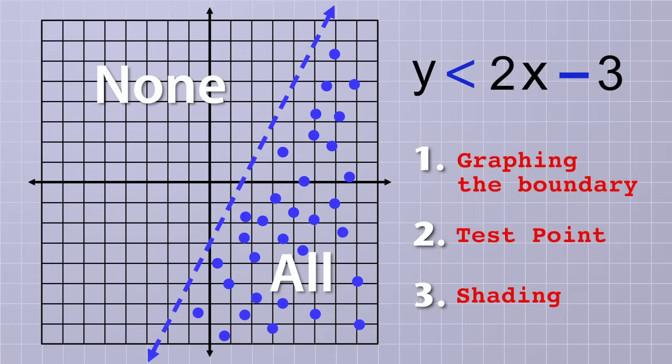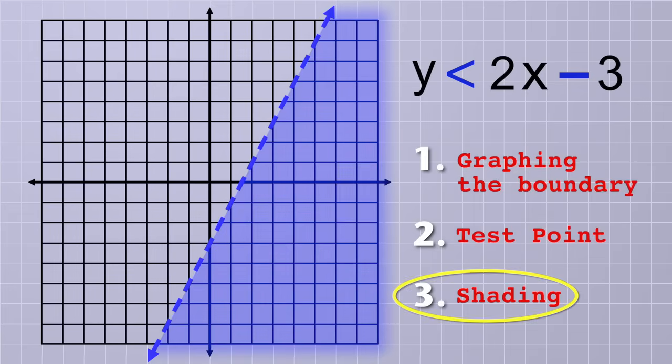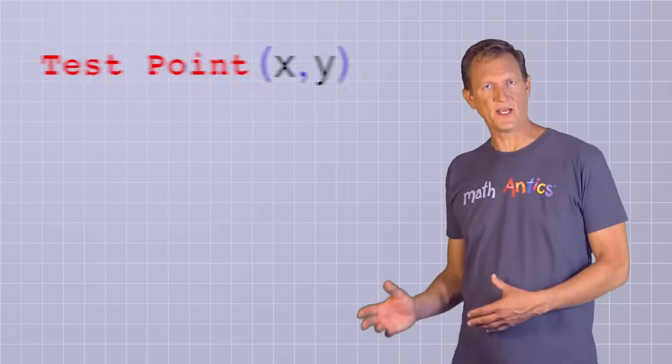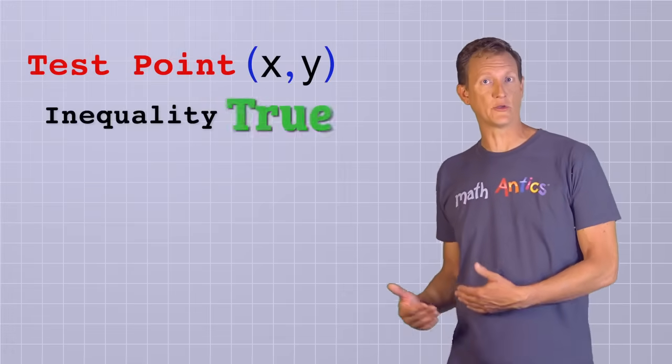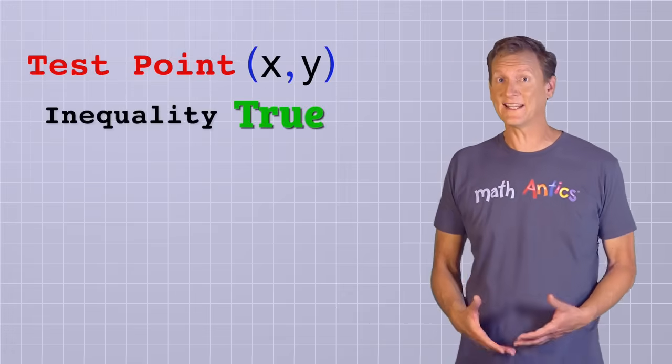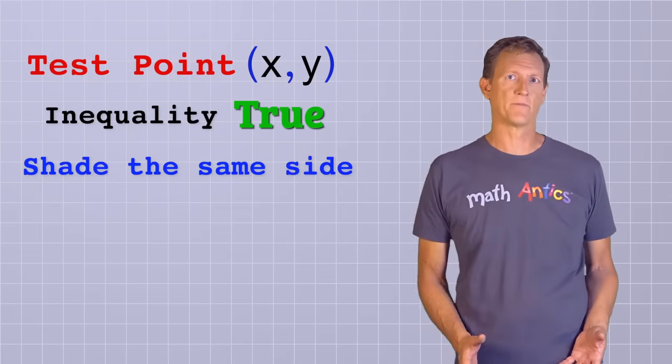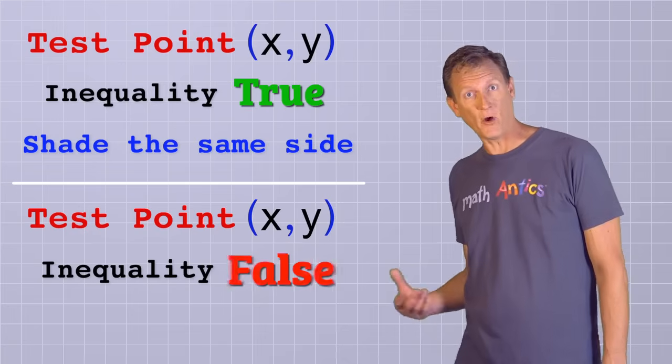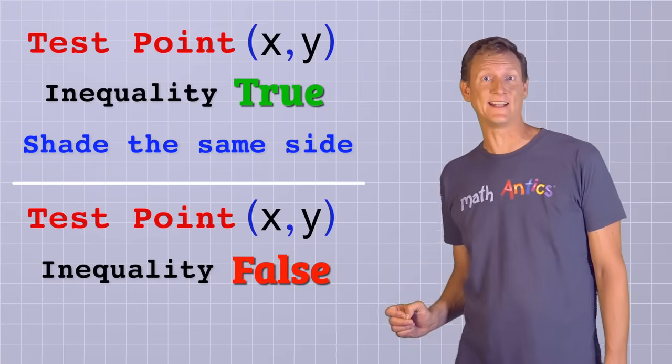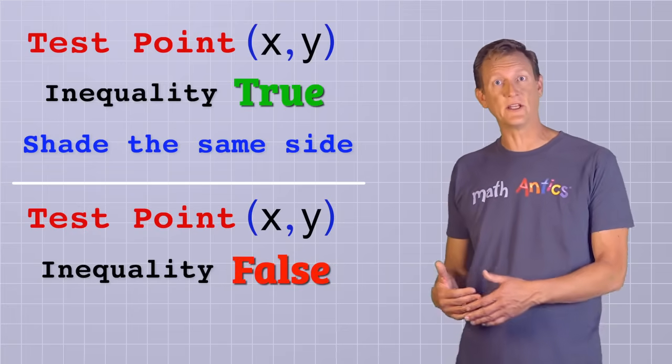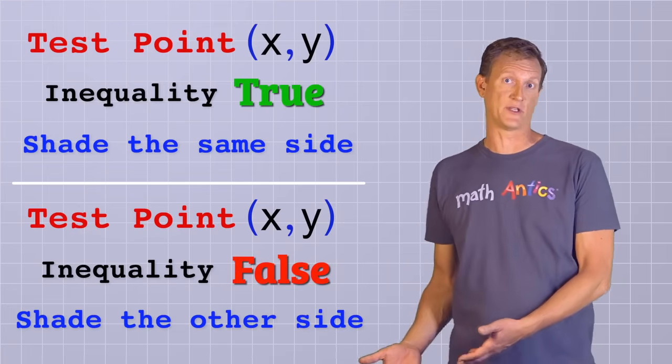So that brings us to the last step. We just need to shade the correct side of the line, like so. To summarize, if the test point you pick makes the inequality true, then you've picked a point that's in the answer set, which means that you'll shade the same side of the graph that that test point is on. But if the test point gives you a false statement, then you know that it's not in the answer set, which means that you'll leave that side blank and shade the other side.